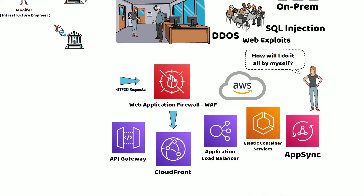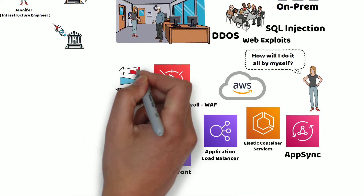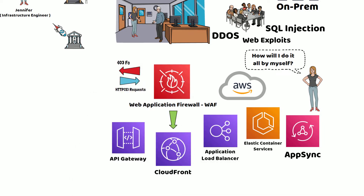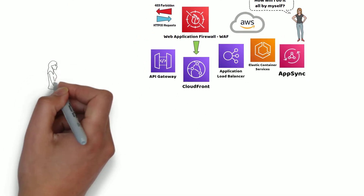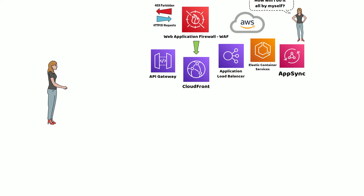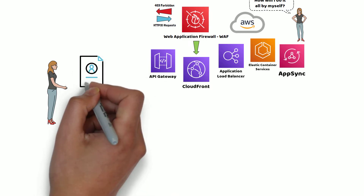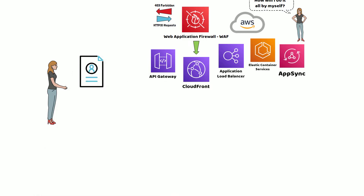WAF can either allow an incoming request or restrict them by sending a 403 forbidden status. Jennifer discovered that to protect against various attacks, she had to create Web Access Control Lists, or WebACLs.